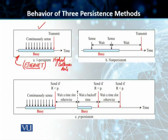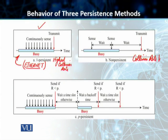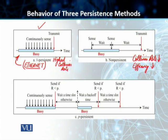Non-persistent is the second method. If the channel has time slots, a station that has a frame to send senses the line. If the line is idle, it sends immediately. If the line is not idle, it waits for a random amount of time and then senses the line again. The collision rate goes down compared to 1-persistent, but efficiency goes down as well. The reason is that with the wait-and-sense technique, stations may be waiting even when the shared medium is idle, so overall system efficiency decreases.